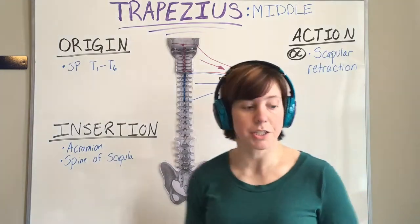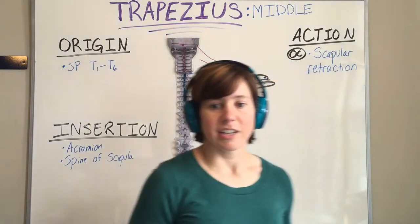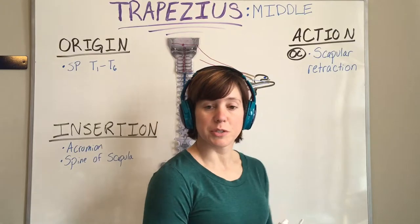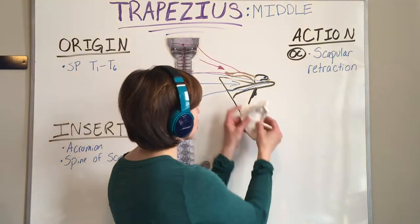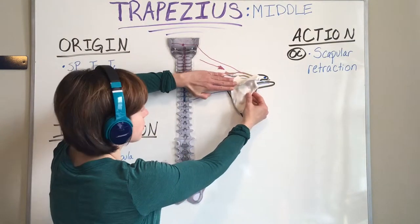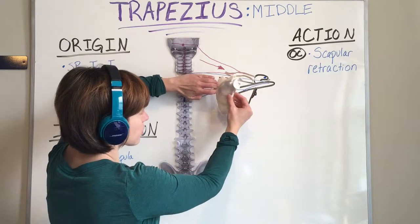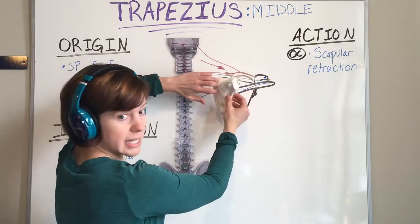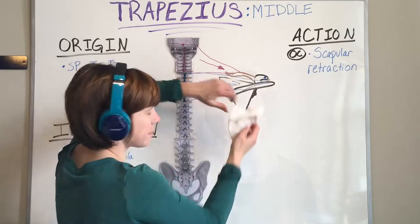The action of the middle trapezius includes scapular retraction, which is a medial slide and external rotation. So when the muscle contracts from this direction, it will retract the scapula with a medial slide and external rotation.